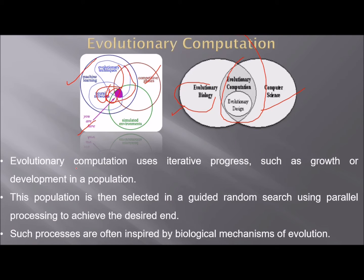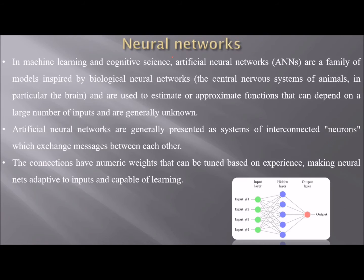Evolutionary computation uses iterative progress, such as growth or development in a population. This population is then selected in a guided random search using parallel processing to achieve the desired end. Some processes are often inspired by biological mechanisms of evolution, hence the name evolutionary computation.